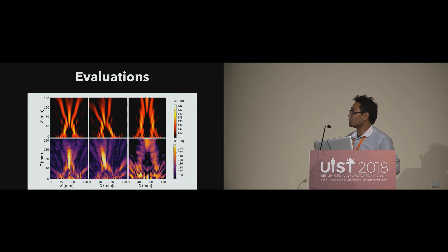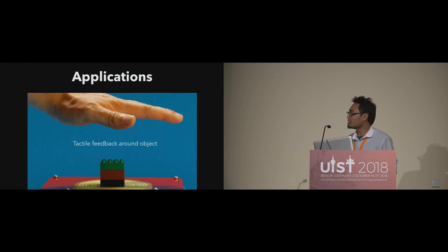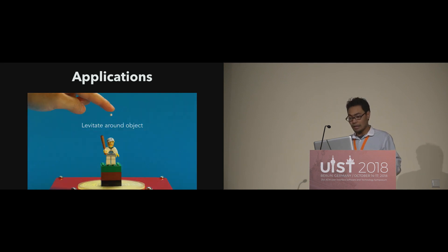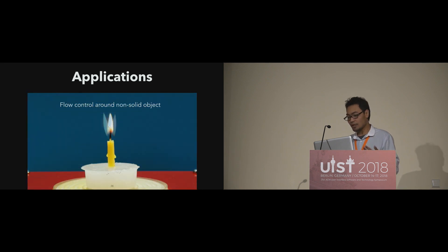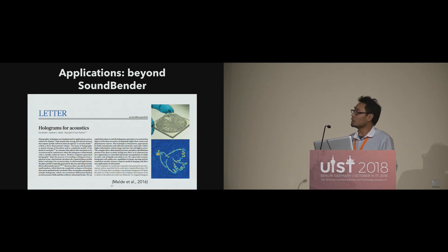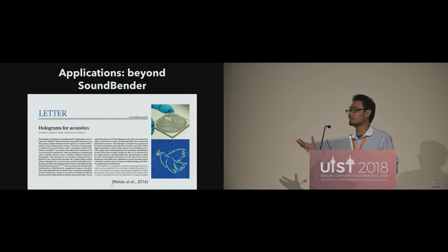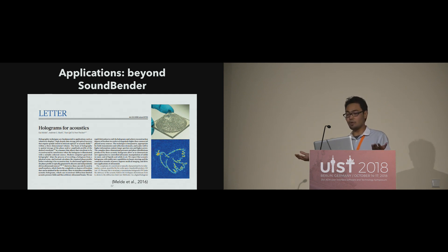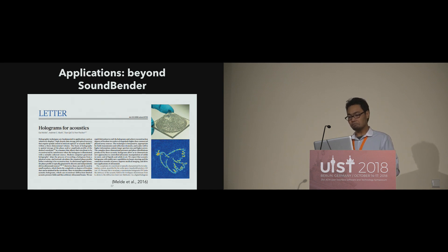Then we did some evaluations. The top shows simulation and the bottom shows measurement — and there's good correlation. The applications, as seen in the video, include tactile feedback around objects, levitation around objects, and flow control. What's most interesting to us is we can now play with these metamaterials — for example, an acoustic hologram where we can create icons that cannot be done by ultrasound speakers alone. In a board game scenario, you can swap between obstacles and toys with haptic feedback and levitation by using new types of metamaterials to make it more engaging and interactive for users.